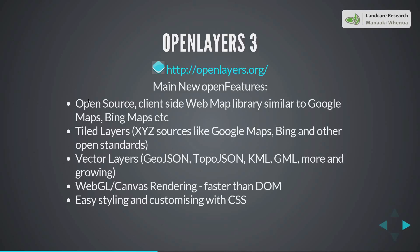There are vector layers which support various vector formats — some of the important ones include GeoJSON, TopoJSON, KML, GML, and more. The library is growing fast and it's in beta at the moment, though you can already use it for production. Probably the best new feature of OpenLayers 3 is the new rendering engine support — WebGL, which is OpenGL for the web, and canvas rendering which is basically HTML5. It's a lot faster than DOM rendering. You can also do easy styling with CSS, which is the web technology for styling in the browser.